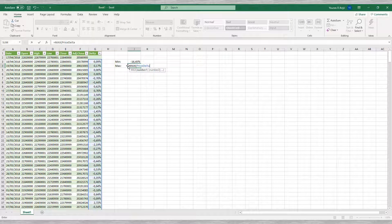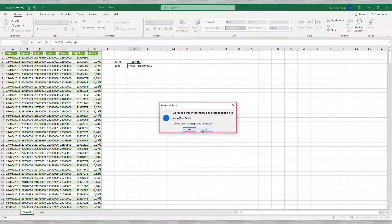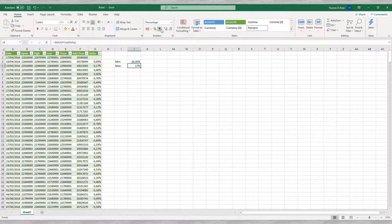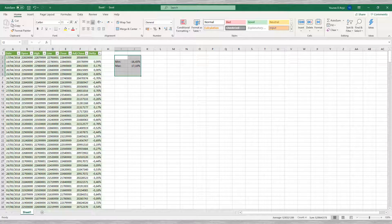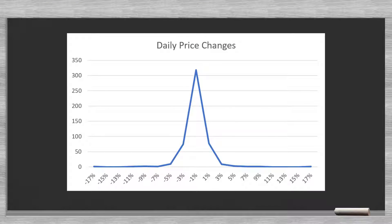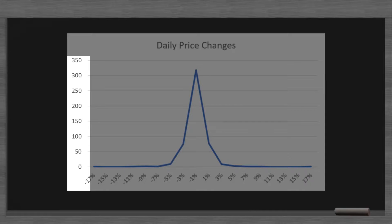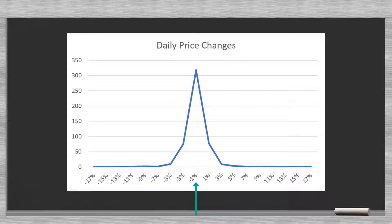The minimum is minus 16.50%. We can find the biggest upswing using =MAX(delta_price), which is plus 17.01%. We could create a distribution with the horizontal axis showing a scale of price movements between the minimum and maximum, and the vertical axis showing the number of times a certain price change occurred — this is the frequency. We see that on most days the price change is zero or close to zero. The surface of this graph represents 500 observations, sorted from the smallest price change on the left to the biggest on the right.